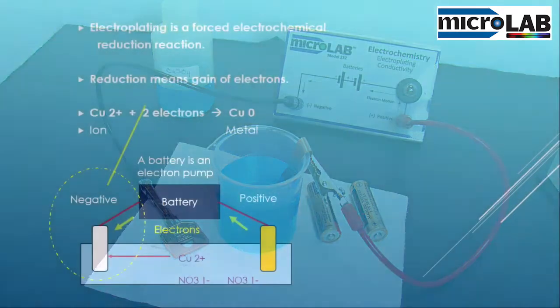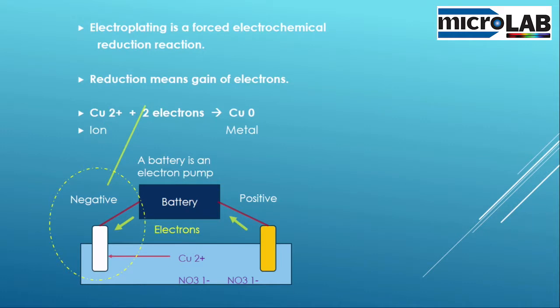And what we have going on here is called electroplating. It's a forced electrochemical reaction and reduction reaction. Reduction means gain of electrons.